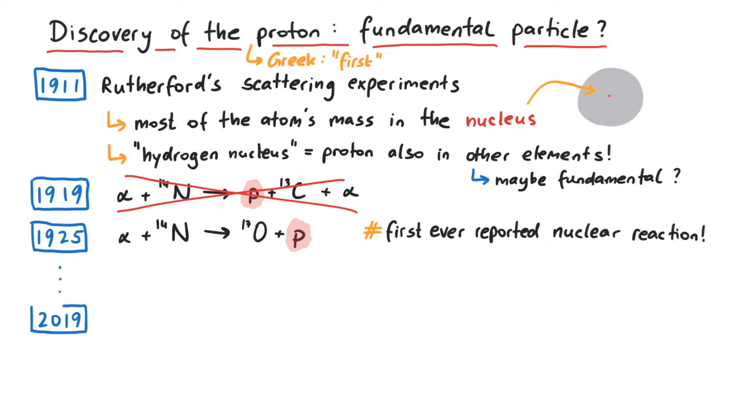Nowadays we know many other properties of the proton. It has a charge of plus one elementary charge, it has spin one-half, therefore it's a fermion, and in the quark model, it's composed of two up quarks and one down quark.